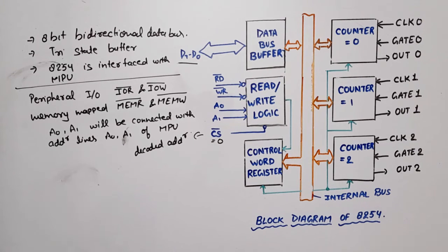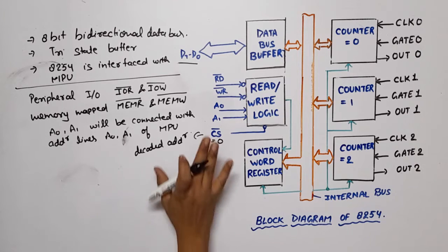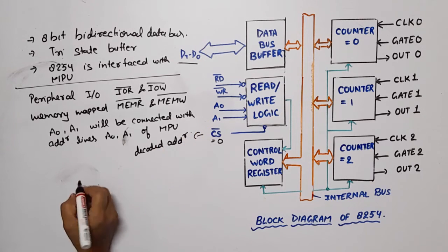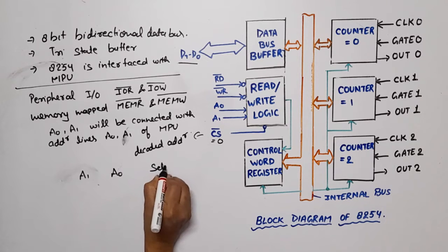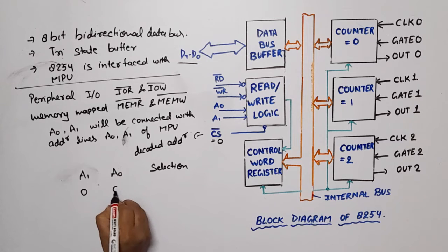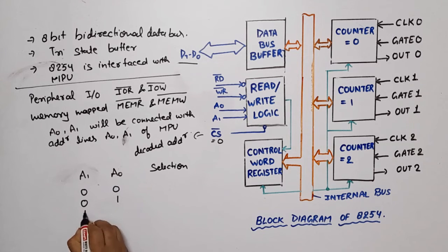Now, we will see how the selection of counters and controls are connected with the decoded address. Now, we will see how selection of counters and control word register depend on the value of A0 and A1. So address line A1, A0 and here selection. There is 2 bits means number of combination 4: 00, 01, 10, 11.